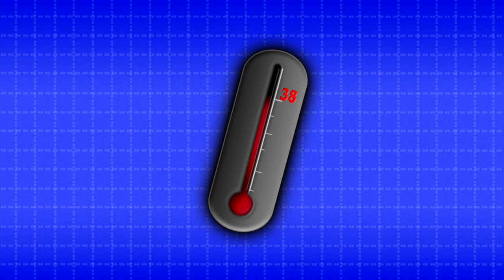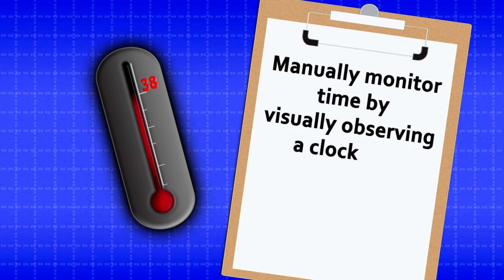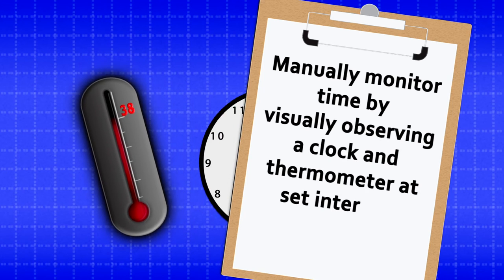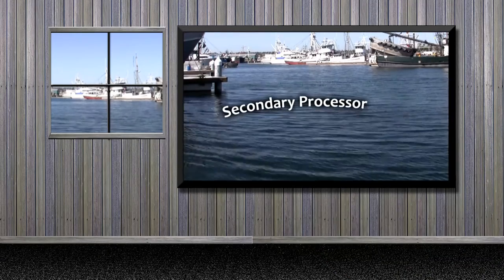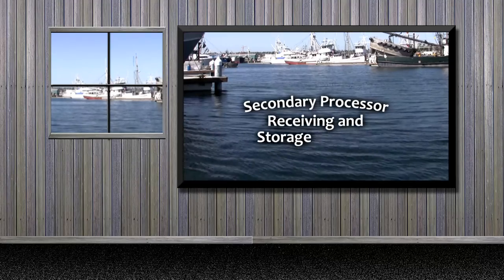If you choose a device that doesn't produce a record, then you should manually monitor time by visually observing a clock and thermometer at set intervals throughout processing. A detailed discussion on the various types of temperature indicating devices, the advantages and disadvantages of each, and accuracy in calibration can be found in the companion video, Secondary Processor Receiving and Storage Controls.